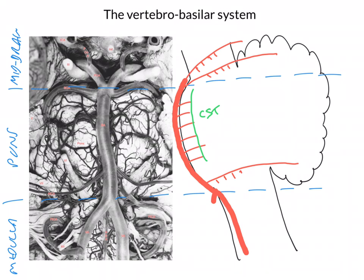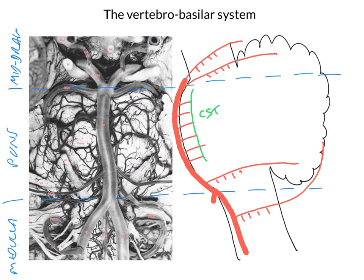Now we can add the posterior inferior cerebellar artery — the PICA — which supplies the posterior inferior aspect of the cerebellum but also throws off little branches to the lateral aspect of the medulla. So the lateral aspect of the medulla is supplied by branches of the PICA. In certain cases, you might have a cerebellar stroke in the PICA distribution but also a lateral brainstem stroke at the same time if the blockage sits quite proximally in the PICA artery.